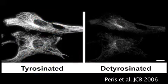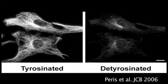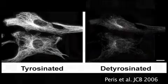The presence or absence of this carboxy terminal tyrosine is often used as a marker to distinguish different populations of microtubules within cells. Microtubules containing de-tyrosinated alpha tubulin are more stable, but this missing tyrosine was thought to be a consequence rather than a cause of microtubule stability.